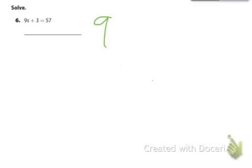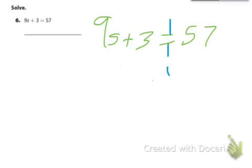Bridge 195, problem 6. First thing we should do is rewrite this: 9s plus 3 equals 57. Then we should draw our balance bar and solve this equation.